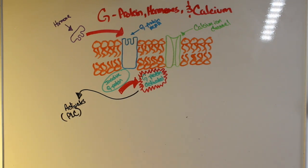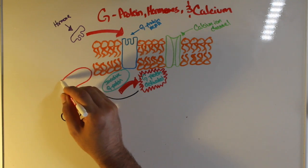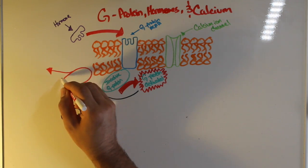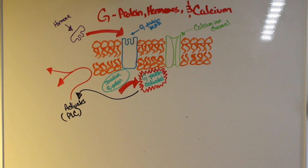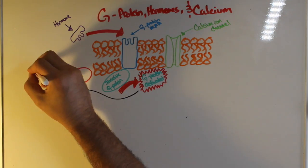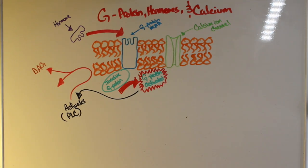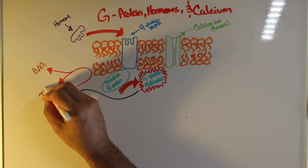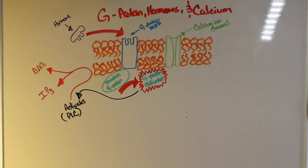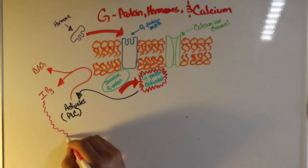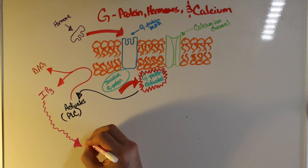Now PLC is very important in this system because it activates DAG and IP3. Now it pulls those from the lipid membrane. DAG stands for diacylglycerol and IP3 stands for inositol triphosphate or inositol 1,4,5 triphosphate to be more specific.